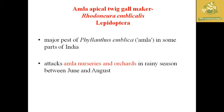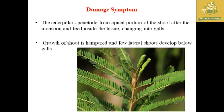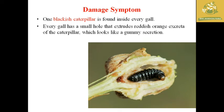The next pest is the Amla apical twig gall maker, with scientific name Rhodoneura emblicus, order Lepidoptera. It is a major pest of Amla in parts of India, attacking nurseries and orchards particularly in the rainy season from June to August. The caterpillar penetrates the apical portion of the shoot and feeds inside the tissue, turning the apical tissue into ball-like galls, hampering shoot growth.